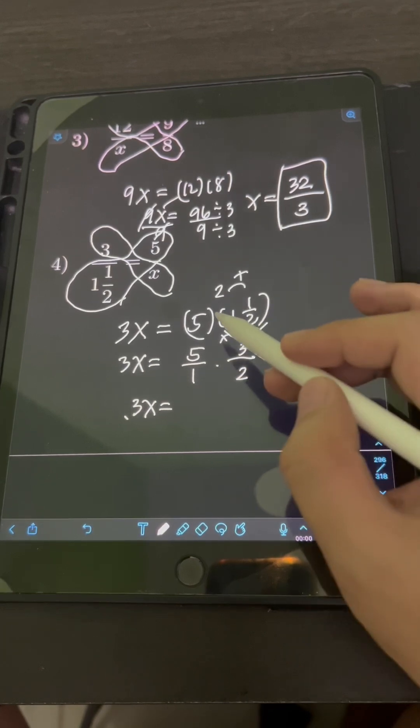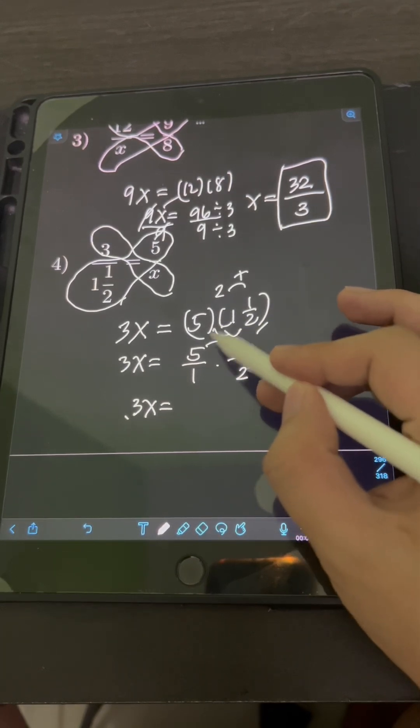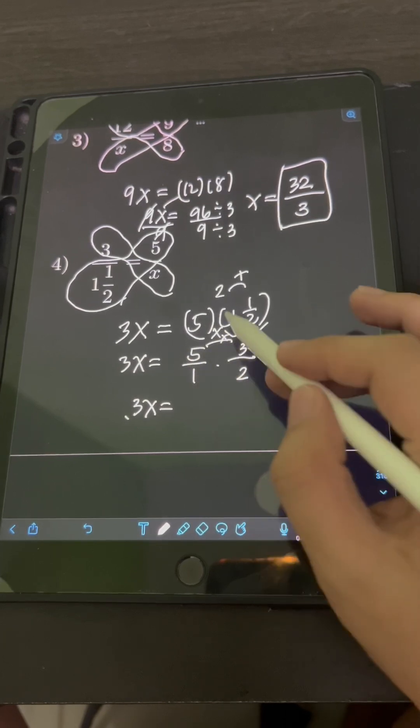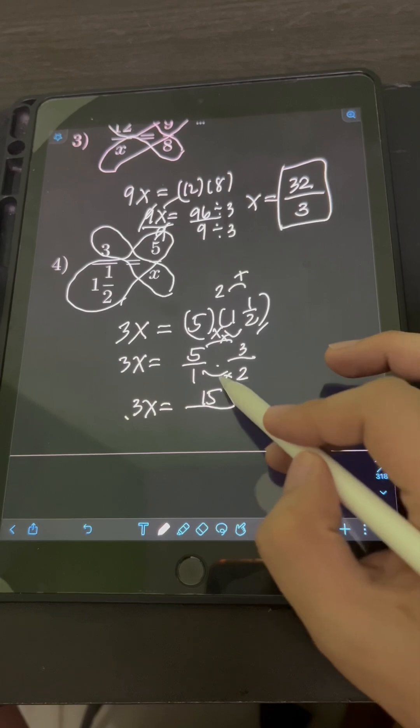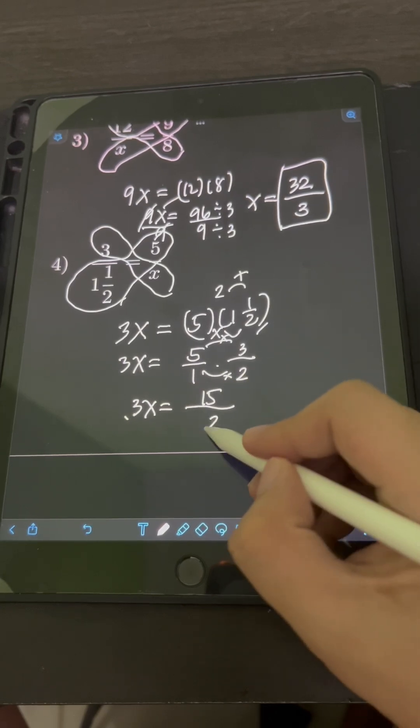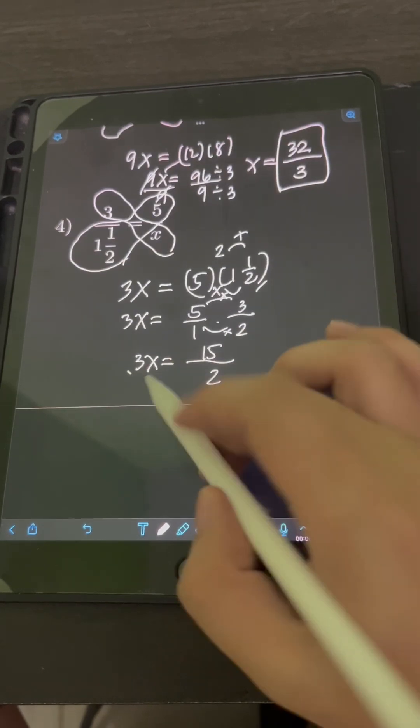So the rule in multiplication is, we just multiply the numerator. So 5 times 3, that's 15, over the product of the denominator, 1 times 2, it's 2. And then to solve for x now,